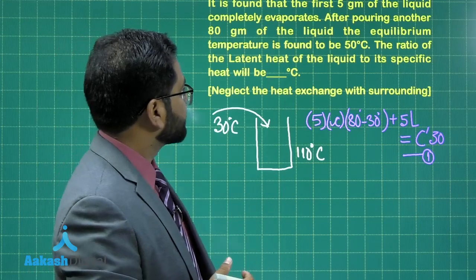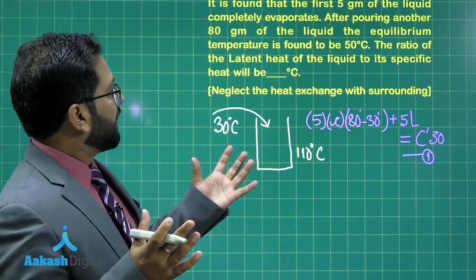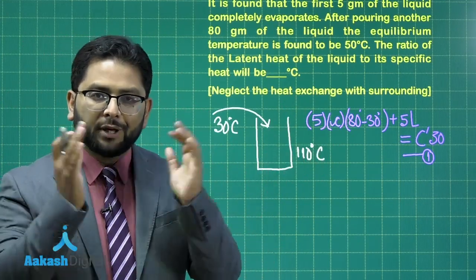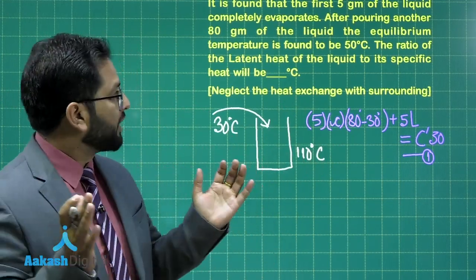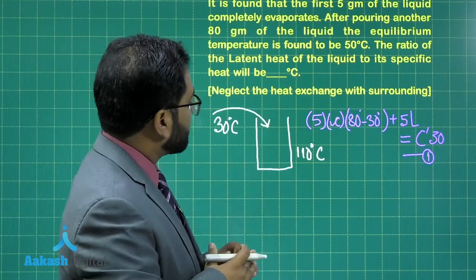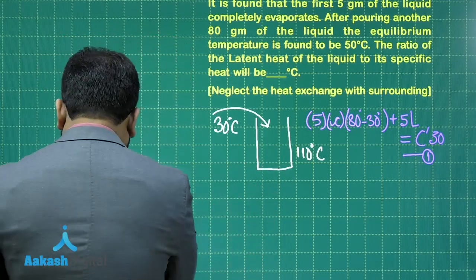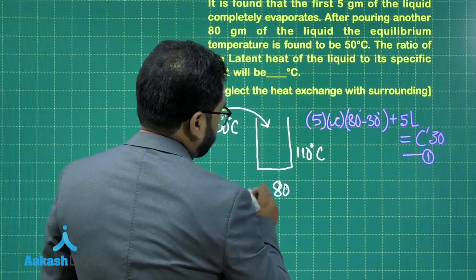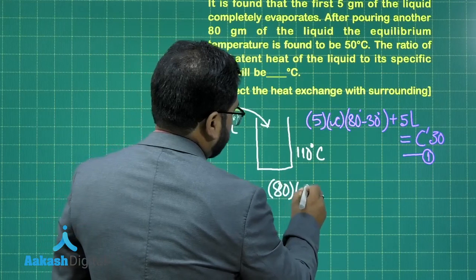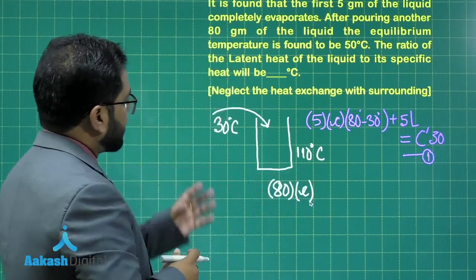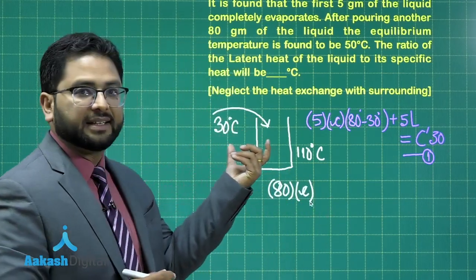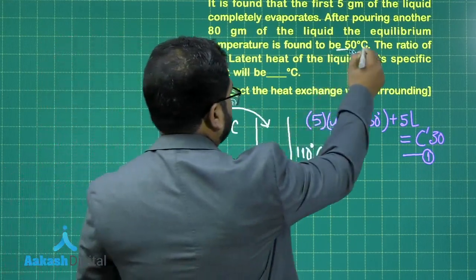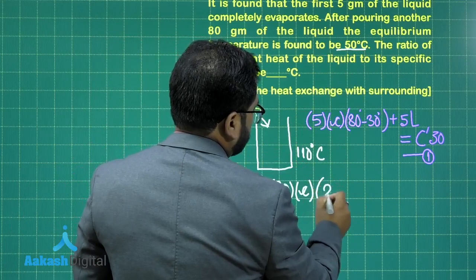Now after that, another 80 grams of the liquid is poured and the equilibrium temperature which comes now is 50 degrees. So let's talk about that another 80 grams of liquid. For the next 80 grams, the mass is 80, specific heat capacity C. And that 80 grams is at temperature 30 degrees and that will go to 50 degrees. That has been given the equilibrium temperature. So 50 minus 30, that's going to be 20.